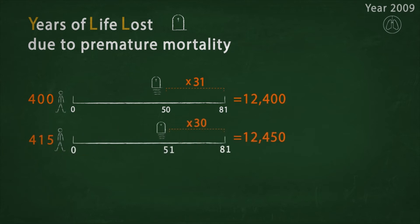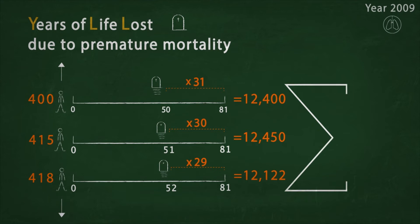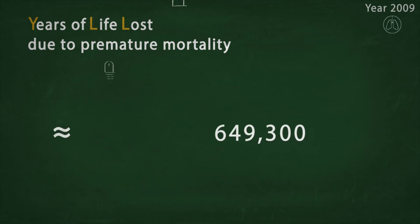Then, at the age of 51, 415 people die from lung cancer, resulting in 12,450 YLLs. We repeat this calculation for all people who died in 2009 due to lung cancer and finally add these values up. For Germany, this adds up to about 649,300 life years lost due to lung cancer. These are the YLLs.